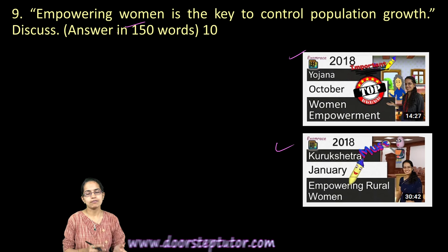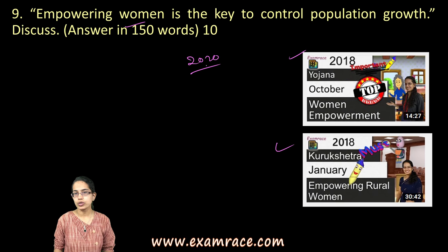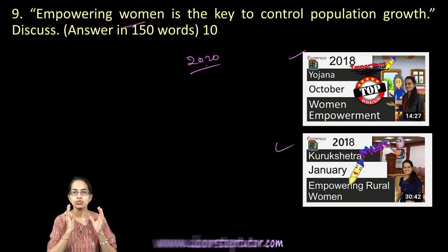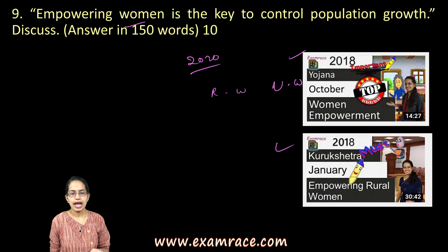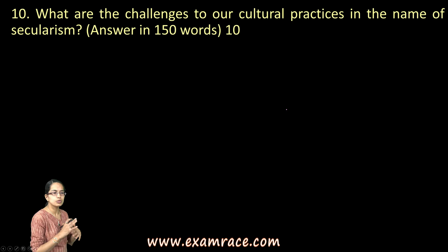With women's empowerment, population growth can be controlled at a much faster pace. You can use provisional 2020 census data to substantiate your answer. Try to include statistics — for example, compare the proportion of rural versus urban women, employment rates, and the number of children per woman in rural versus urban scenarios to contrast and strengthen your response.